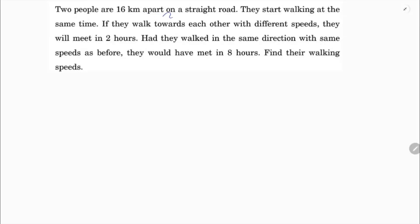Two people are 16 km apart on a straight road. They start walking at the same time with different speeds. They will meet in two hours if they walk towards each other. Had they walked in the same direction with the same speeds as before, they would have met in eight hours. Find their walking speeds.